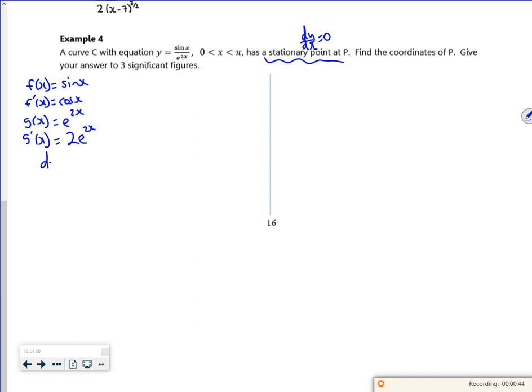Right then, so that's written to the formula. So dy by dx is cos x times e to the 2x minus sine x times 2 e to the 2x, all over e to the 2x all squared.